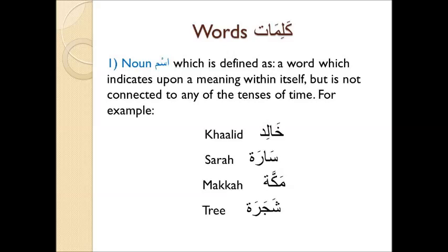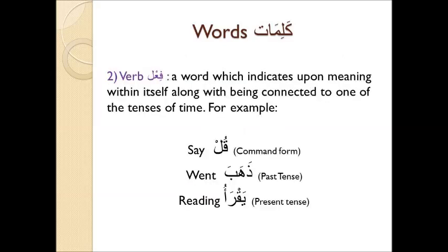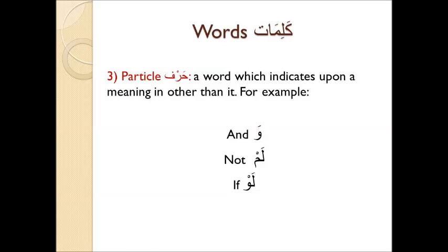Two, fi'al, verb — a word which indicates upon a meaning within itself, along with being connected to one of the tenses of time. For example: qul (say), which is a command form; zahaba (went), which is the past tense; and yaqra'u (reading), which is the present tense. And three, particle (harf) — a word which indicates upon a meaning in other than itself. For example: wa (and), lam (not), and law (if).